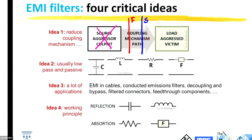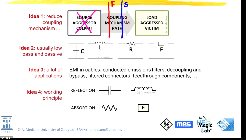The second important idea: in EMI, we usually use passive low-pass filters — low-pass because we want to remove high frequencies, and passive because we don't have the possibility of filtering with operational amplifiers. In low frequencies, big inductors can be replaced with an operational amplifier — for example, in audio applications — but you will need a power supply for the op-amp. In EMI, we use inductors, capacitors, resistors, and ferrites. Another important idea is that there are many applications and components, so giving general design techniques is very difficult.